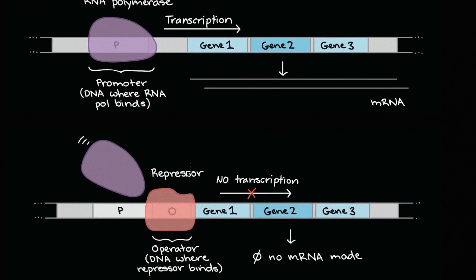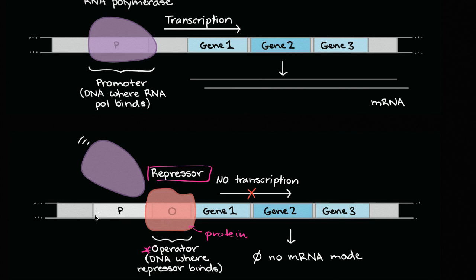Something in our environment might allow repressors to take action. A repressor is a protein that attaches to a sequence of DNA after the promoter, and so it blocks the RNA polymerase from being able to do the transcription - it is literally repressing the transcription. The regulatory DNA sequence where the repressor attaches is called the operator. So the promoter is where RNA polymerase attaches, and the operator is where a repressor can attach to keep RNA polymerase from performing transcription and prevent the genes from being translated.